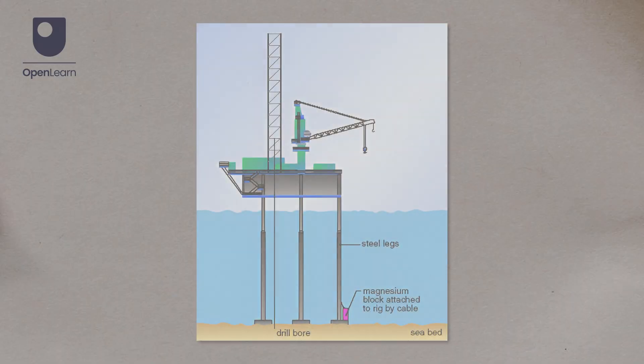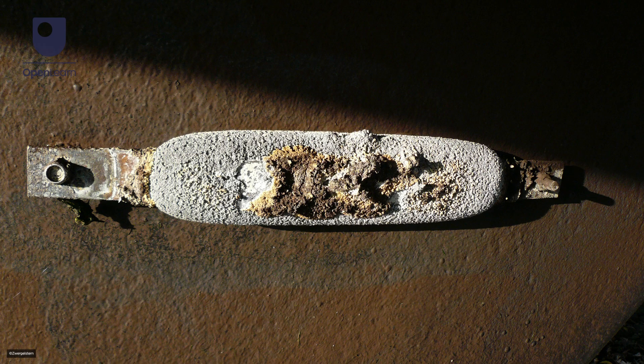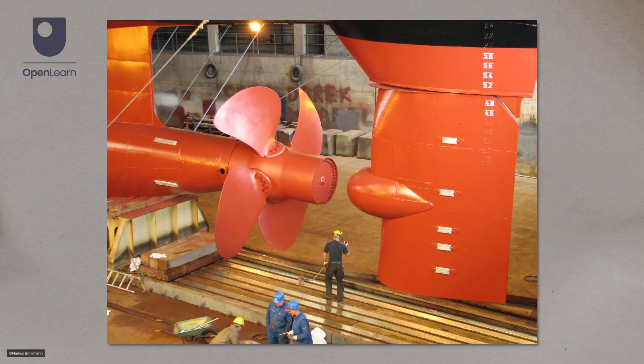A sacrificial metal is another approach of managing corrosion, by attaching a block of an easily oxidized metal, such as aluminium, to large metallic structures such as ships.